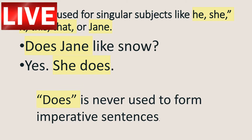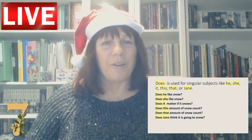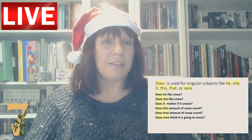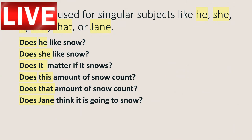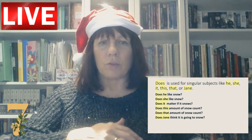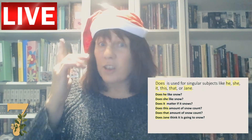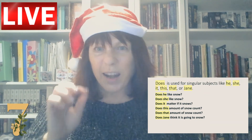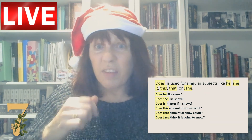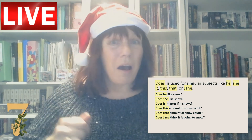Remember, never use 'does' in an imperative sentence and you won't go wrong. For singular subjects, 'does' is used with he, she, it, this, that, or somebody's name. For example: 'Does he like snow?', 'Does she like snow?', 'Does it matter if it snows?', 'Does this amount of snow count?', 'Does Jane think it's going to snow?' I just read it's going to snow for 15 days — not sure if that's true!